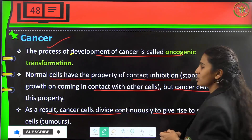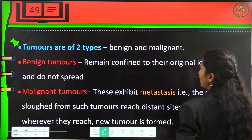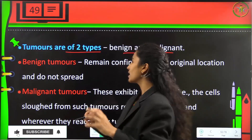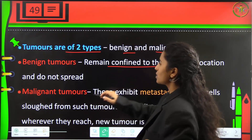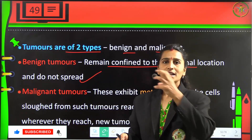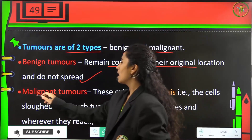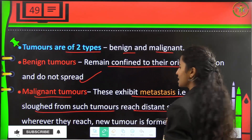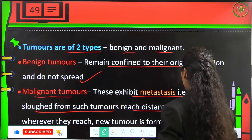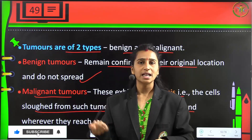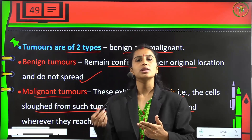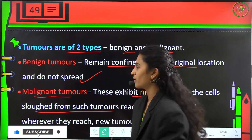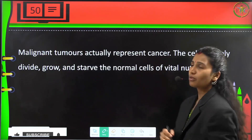As a result, cancer cells divide continuously to give rise to a large mass of cells called a tumour. Tumours are of two types: benign and malignant. Benign tumours are less harmful because they remain confined to their original location, do not spread to other parts of the body, and can be removed — the patient can recover easily. Malignant tumours exhibit metastasis, where cells shed from the tumour reach distant sites and form new tumours wherever they reach.